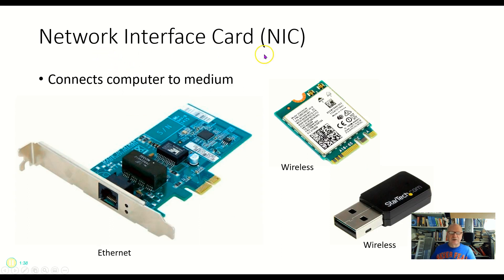Network interface cards — you've seen these, or at least the outside of them. Here is an Ethernet network card; I could plug a twisted pair cable into that and get connectivity. I'd probably put the other side in a hub, for example, or a switch — but we'll talk about switches later, those are layer two devices.